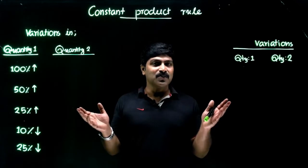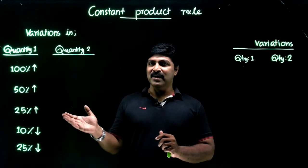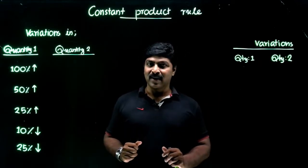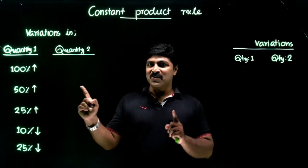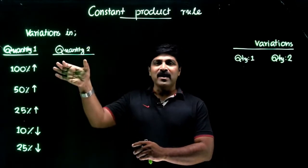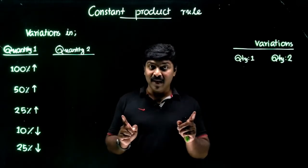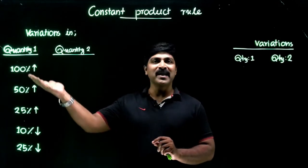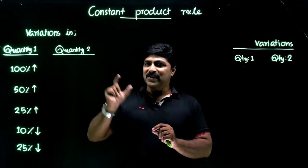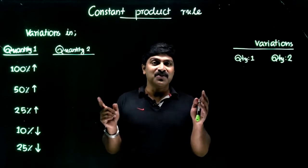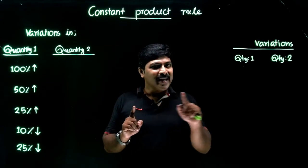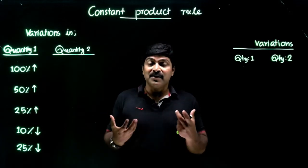We can apply the same calculation concept in other situations. If a contractor hires 100 percent more workers for the completion of a certain project, what percentage of time can he save? The answer is the same — 100 percent increase in the number of workers reduces the time by 50 percent. Similarly, if the price of a commodity is increased by 100 percent, you have to reduce your consumption by 50 percent to keep the same expenditure.